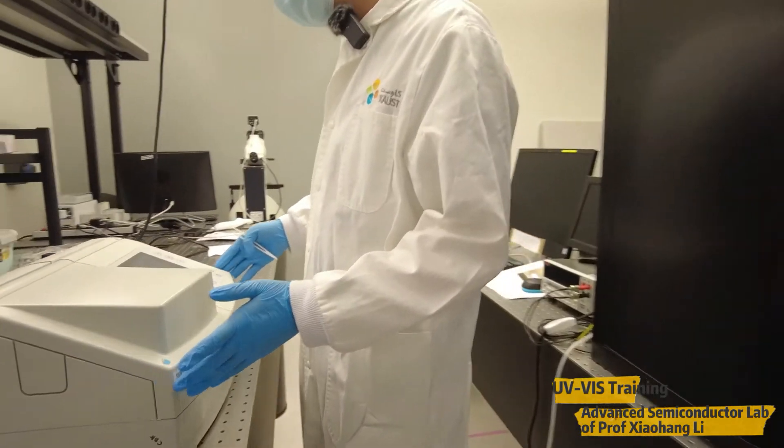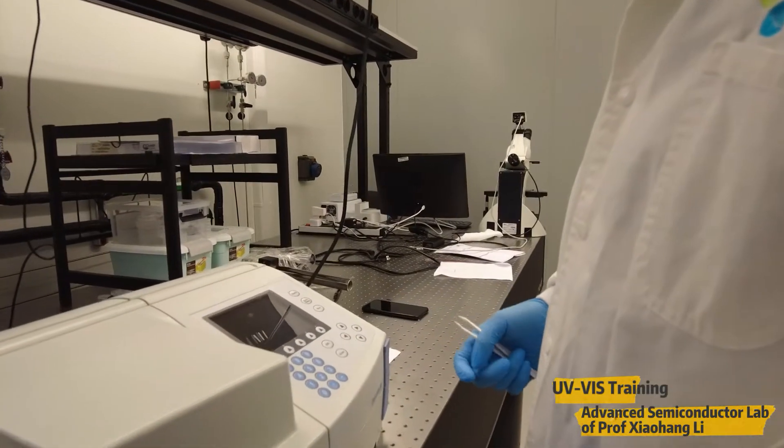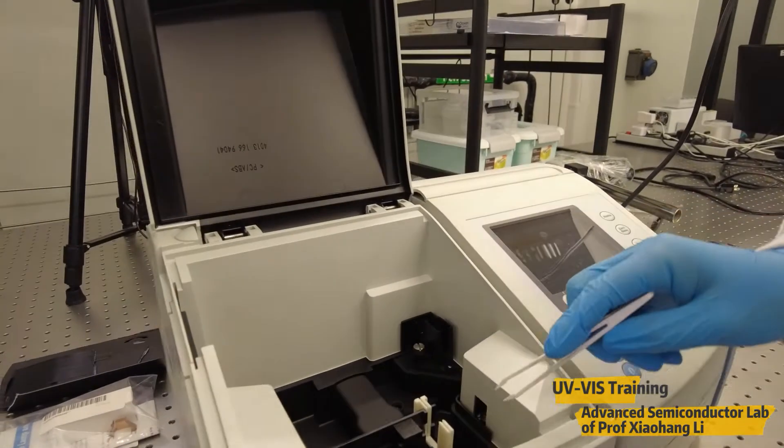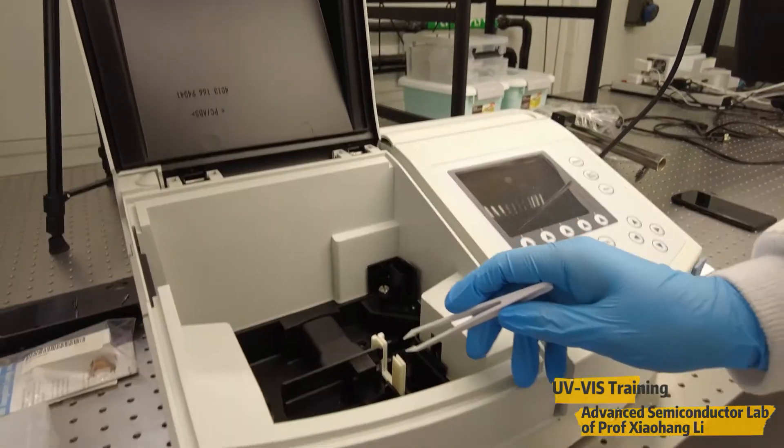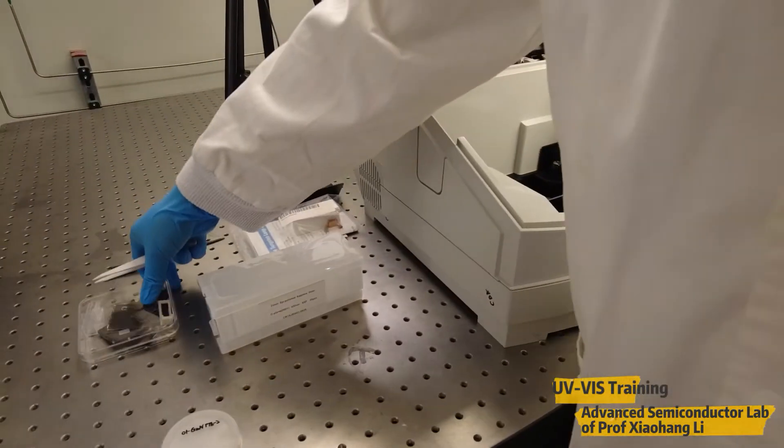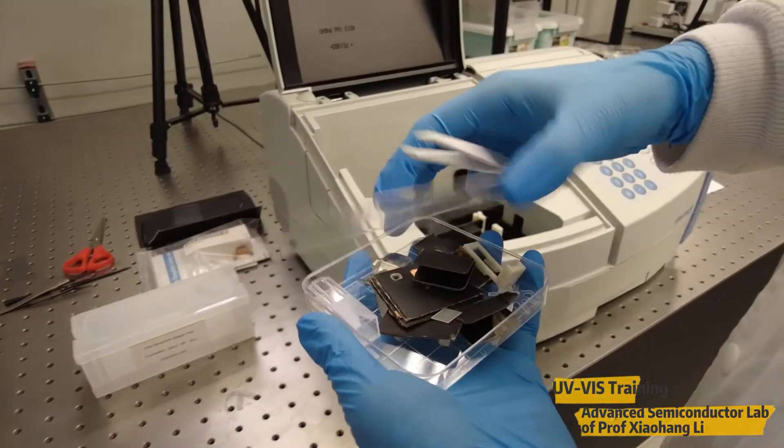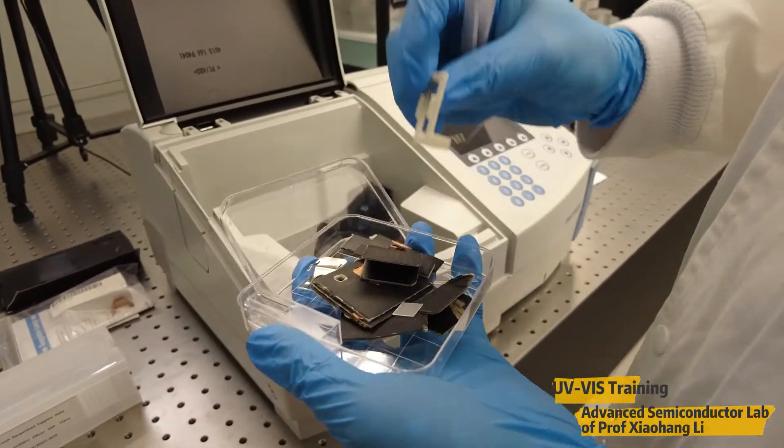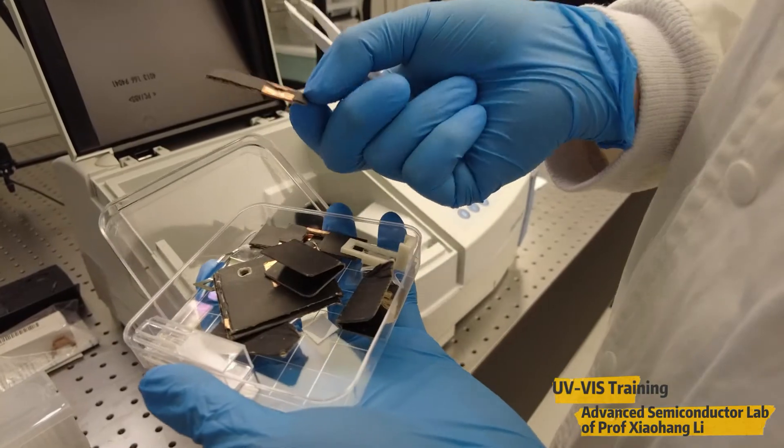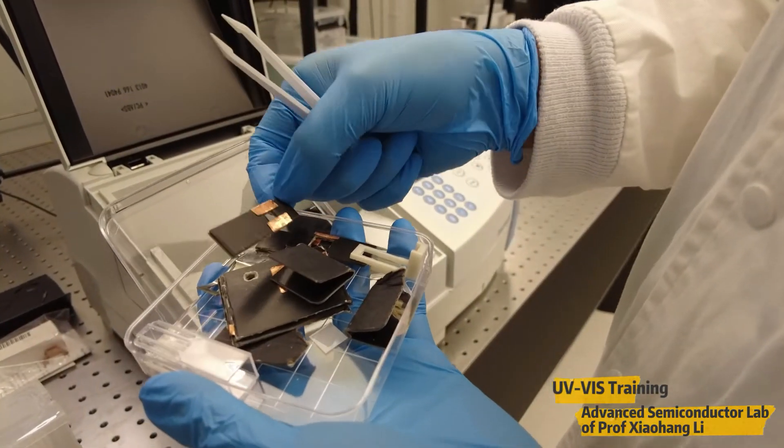This is the UV spectroscopy that we use. Here we are going to use one sample holder which we made ourselves. This is for the 2 inch. We also have other sample holders that we made such as for 1 by 1 centimeter, 0.5 times 0.5 centimeter square.